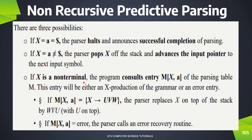In the third case, the stack top is a non-terminal. So if x is a non-terminal, the stack top is a non-terminal symbol. In this situation, we will go to the parsing table. The program consists of an entry M[x, a]. We will denote the parsing table as M, where x is the stack top symbol and a is the input buffer symbol.